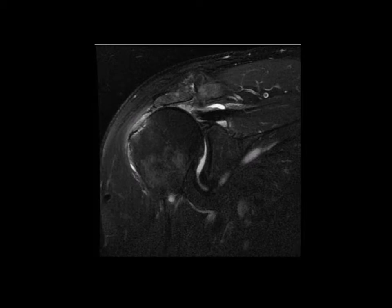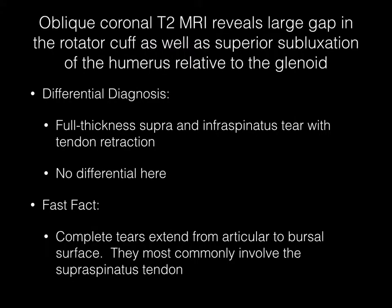Now pause your media player. This oblique coronal T2 MR image reveals a large gap in the rotator cuff as well as superior subluxation of the humerus relative to the glenoid. The diagnosis here is full thickness supra- and infraspinatus tears with tendon retraction. There really is no differential here.